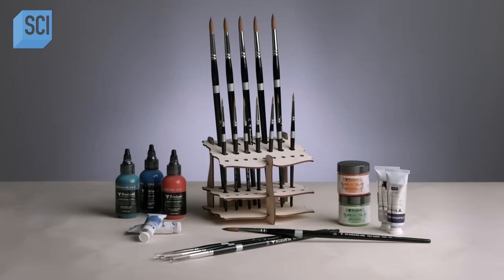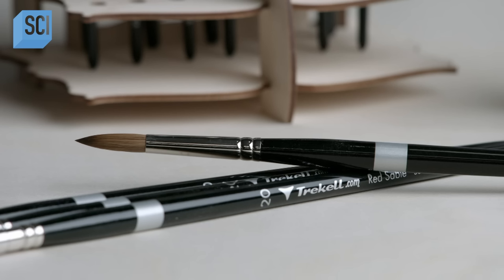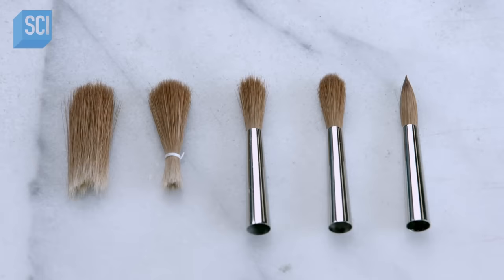These natural hair paint brushes are made of red sable, which is tail hair from a species of weasel. Red sable is renowned for its softness and for spreading paint thinly and evenly.